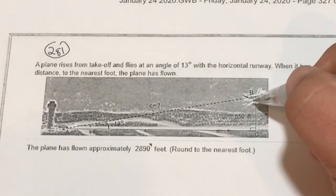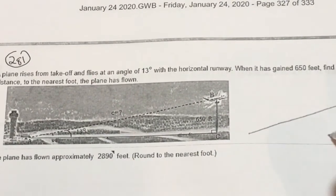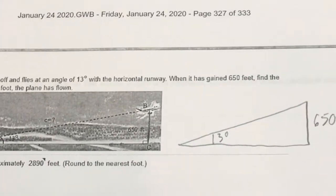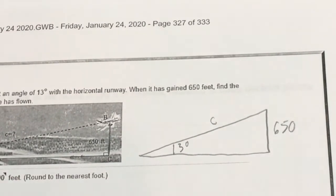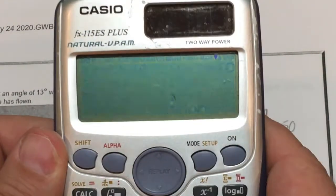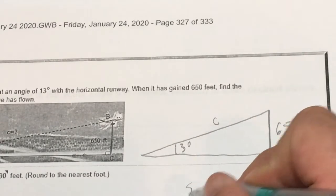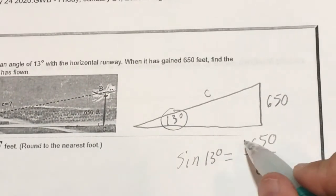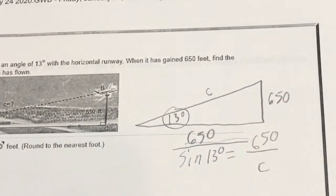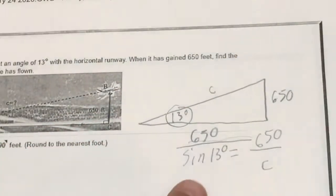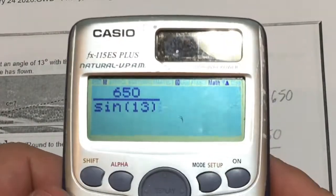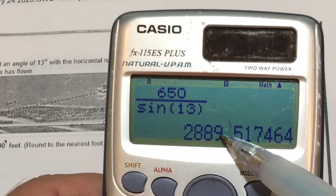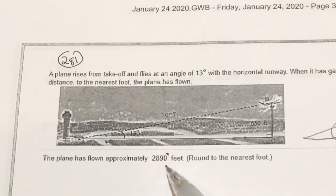Application problem. The height of the triangle is 650 feet, and the angle given is 13 degrees. I need to find side length C — the hypotenuse. Back to degree mode with shift mode 3. This is opposite over hypotenuse, so sine of 13 degrees equals 650 over C. All I have to do is slide 650 over sine 13. Typing 650 over sine(13) with the parenthesis closed gives me 2889.51. Rounded to the nearest foot, that's 2890.